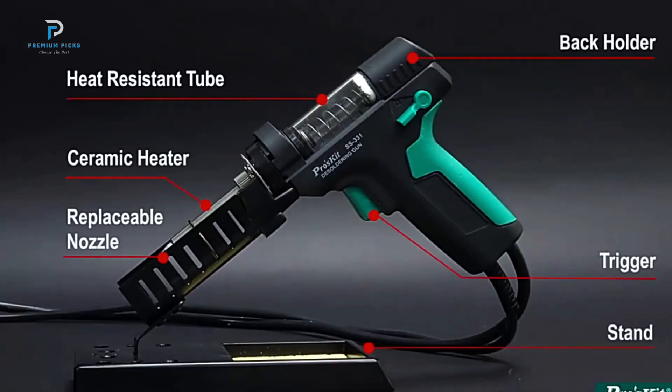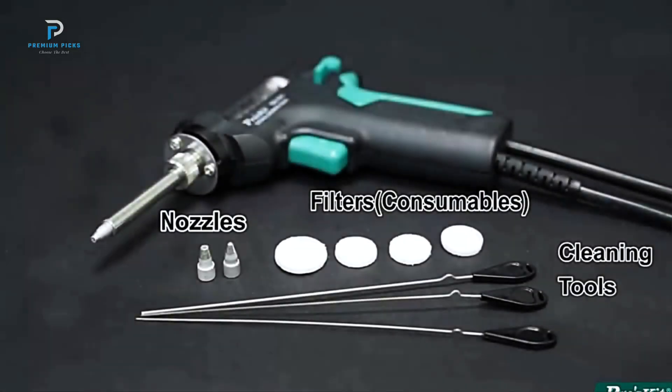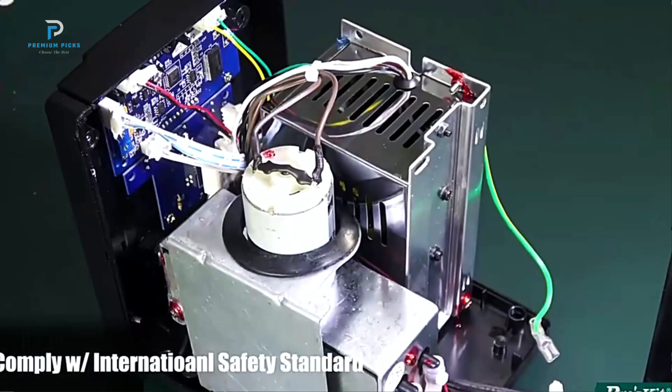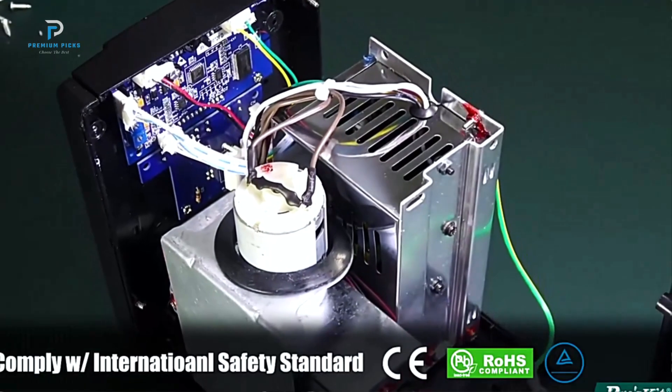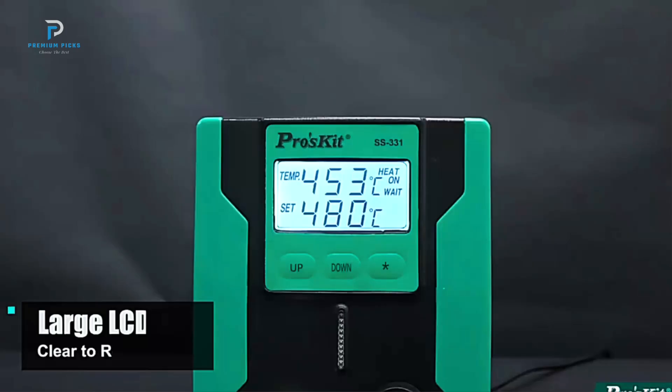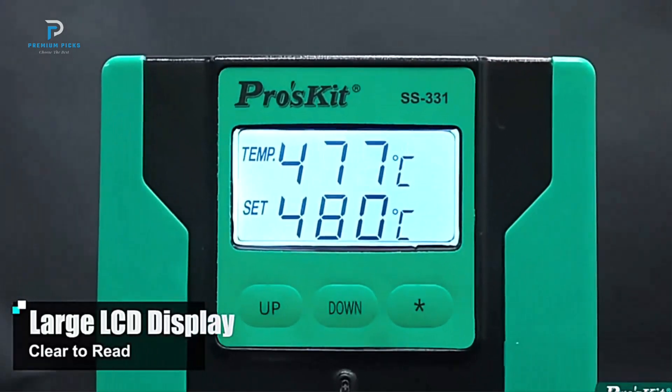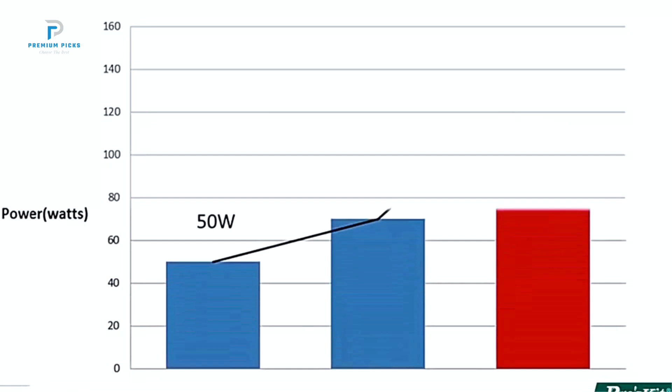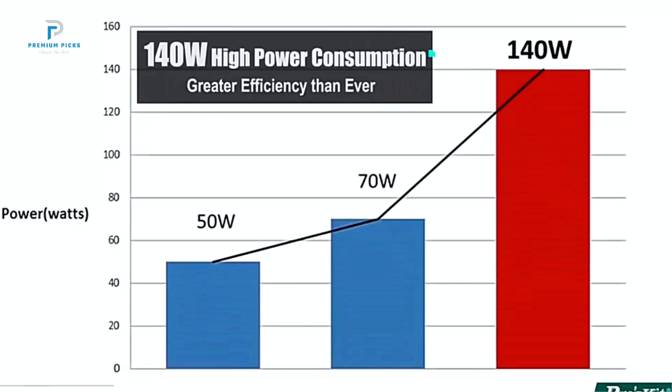With 90W soldering power and a total power consumption of 140W, the ProsKit SS331H can easily handle demanding desoldering tasks. The adjustable temperature range of 160 degrees Celsius to 480 degrees Celsius allows for fine-tuned control, perfect for working with a variety of components and materials.